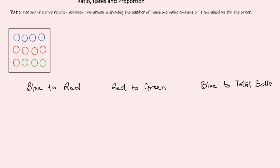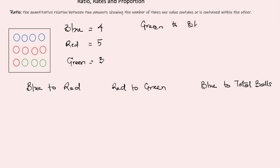So in this case, for example, if we assume that this is a box containing 12 balls — 4 blue balls, 5 red balls, and 3 green balls — we can write that as: blue equals 4, red equals 5, and green equals 3. If we're asked to express a ratio between any two colors, let's say green balls and blue balls, then the ratio of green balls to blue balls: there are 3 green balls and 4 blue balls, so the ratio is 3 to 4.